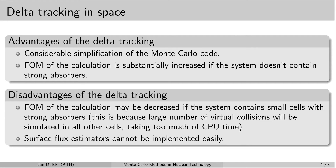If the system does contain strong absorbers, then the figure of merit may be decreased compared to traditional tracking of neutrons. Monte Carlo codes that offer delta tracking may have another disadvantage: they may not be able to provide fluxes at surfaces. If you want to calculate the neutron flux at a certain surface, this is difficult when delta tracking is employed, because the passing of neutrons through boundaries is not monitored at all, making it difficult to calculate the neutron flux at surfaces.